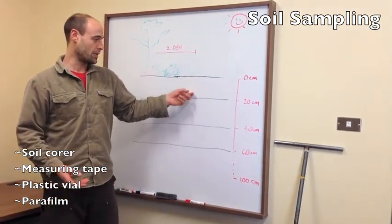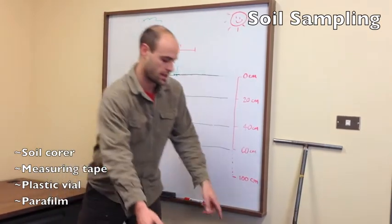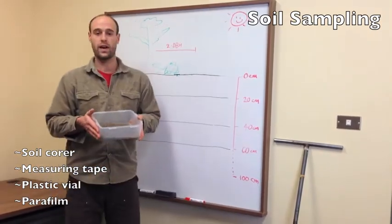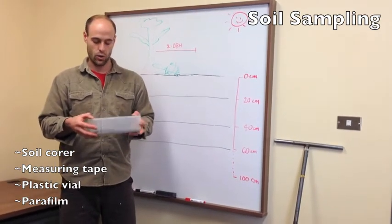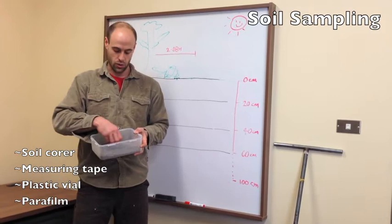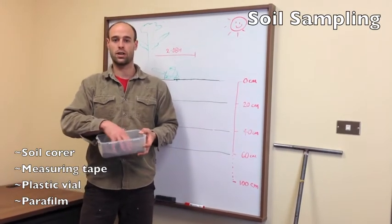Once you've dug down 20 centimeters, remove the soil corer, take the soil, and we find it easiest to dump the soil into some sort of bin or container which you can then mix it in. So take your hands, mix it up, get it good and mixed.